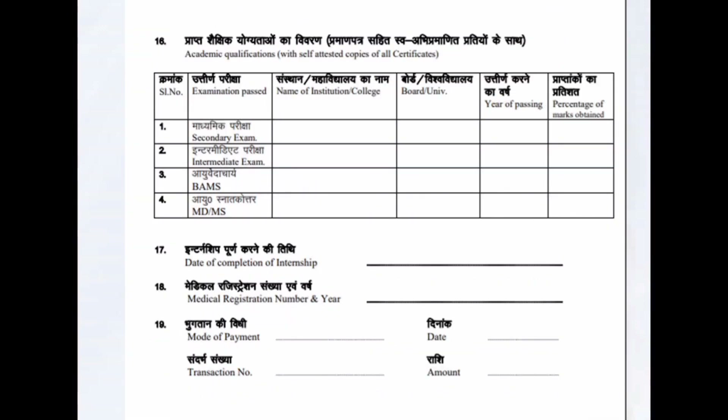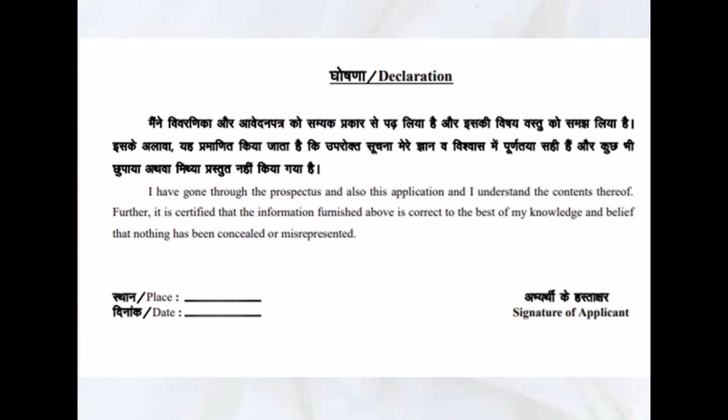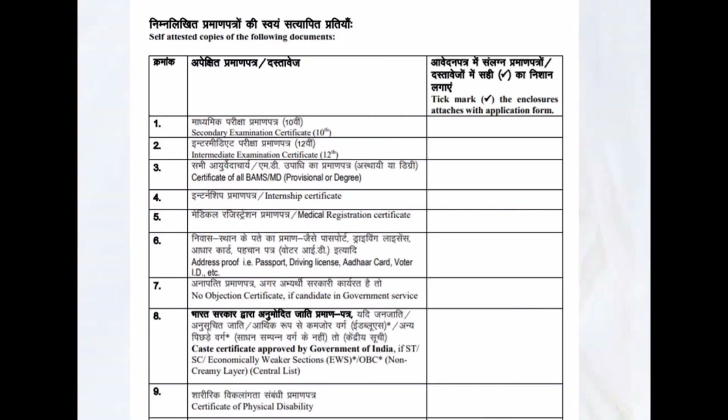Attach your marks cards here. The secondary exam refers to the 10th exam, intermediate refers to the 12th exam, BAMS and MD/MS you know. Fill in the date of completion of internship, medical registration number, mode of payment — which is online — and the transaction number. Note down the transaction number and write the date and amount. There is a declaration confirming you have gone through the prospectus and all information given is correct to the best of your knowledge.